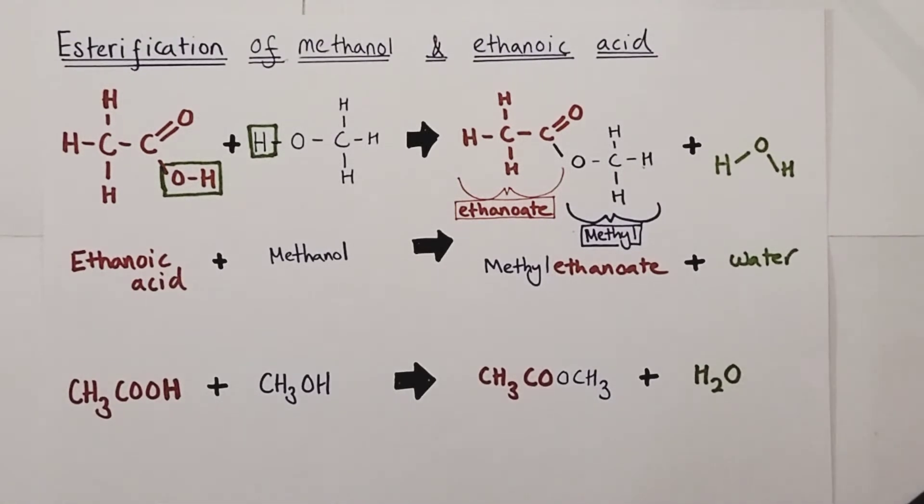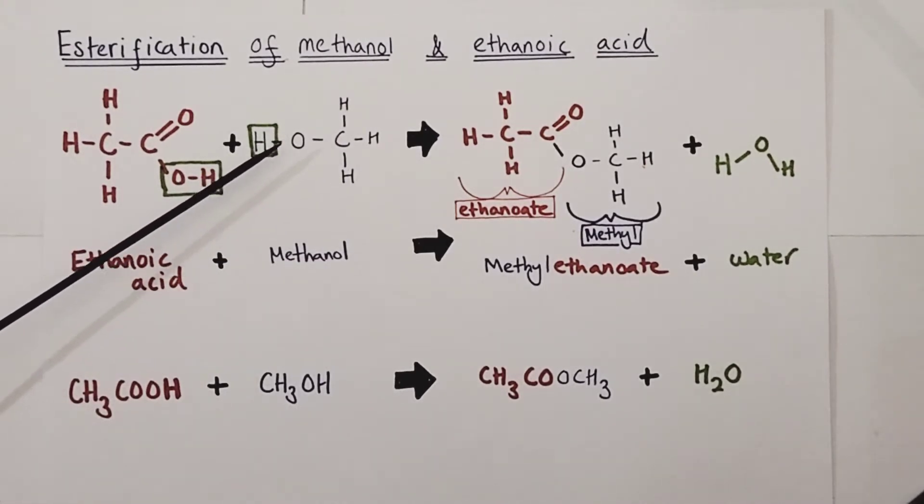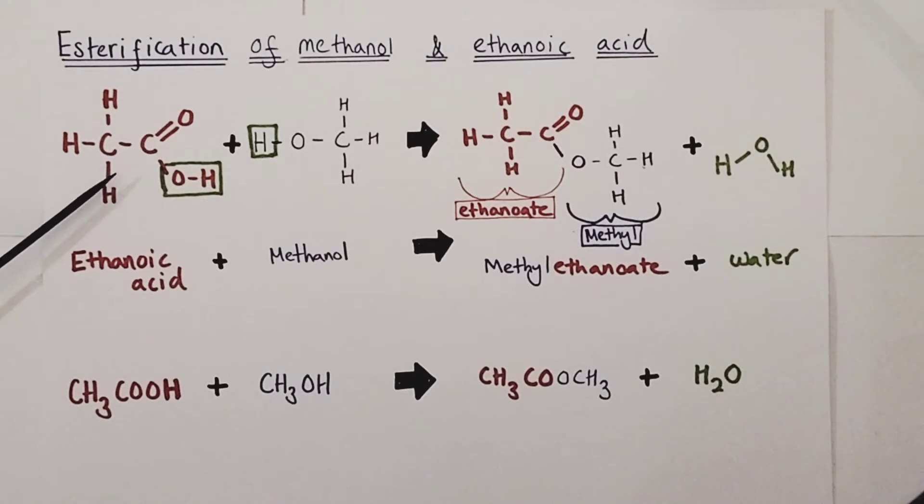If we look at the reactants in this esterification, you'll see that I've drawn the ethanoic acid as a full displayed formula and next to it the methanol also in its full displayed formula. I've also tried to turn the methanol around so that the functional group OH is pointing towards the carboxylic acid. I've done that on purpose to help illustrate how this esterification reaction will proceed.